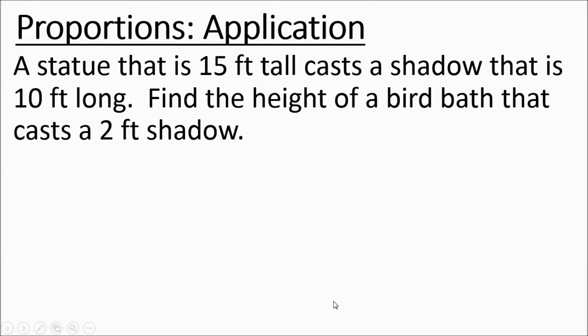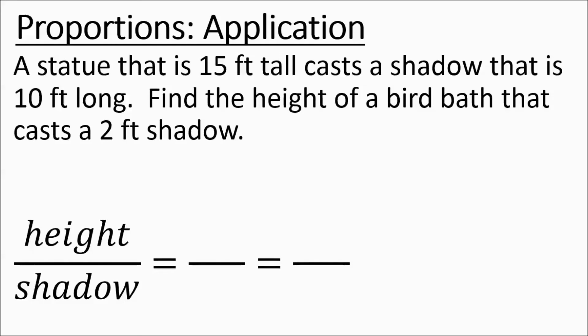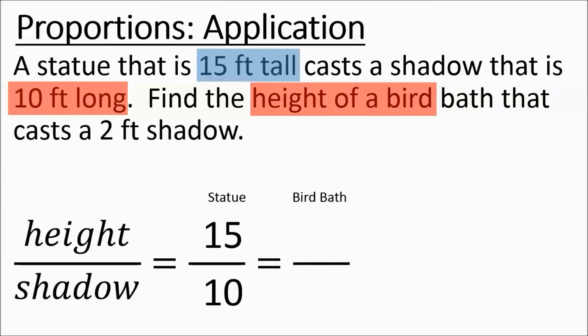So we've got a statue. A statue that is 15 feet tall casts a shadow that is 10 feet long. Find the height of a birdbath that casts a 2-foot shadow. So we're dealing with heights and shadows. They tell us about a statue and a birdbath. They say the statue is 15 feet tall. Then they say the shadow of that statue is 10 feet. Then they ask about the height of the birdbath. We don't know the height, so that's going to be our variable. And they say it casts a 2-foot shadow. So we're going to put that in there.